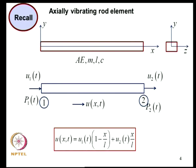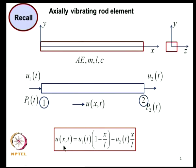In the last class we considered element behavior where the element was modeled as an axially vibrating rod element — a line element. The parameters of the element are: axial rigidity, mass per unit length, length, and damping. We assumed the cross section is symmetric, specifically rectangular. We identified two nodes at X=0 and X=L; the field variable at X=0 is U1 and at X=L is U2. The displacement field at any point X is expressed in terms of nodal values U1 and U2, and the functions (1 - X/L) and (X/L) are the interpolation functions.